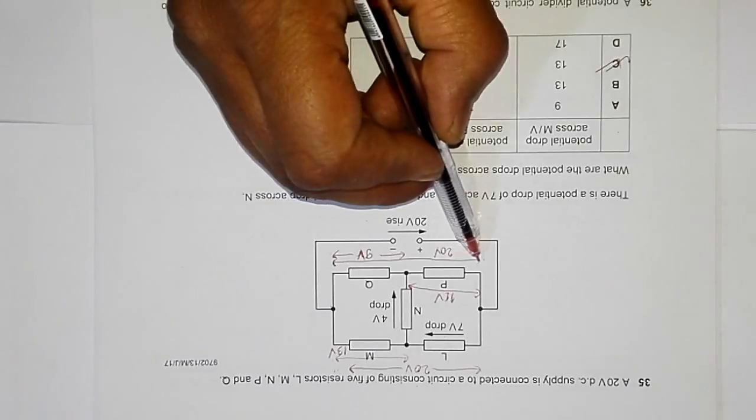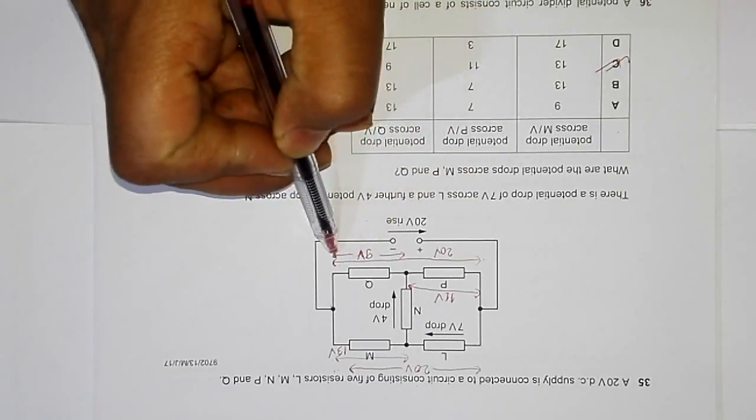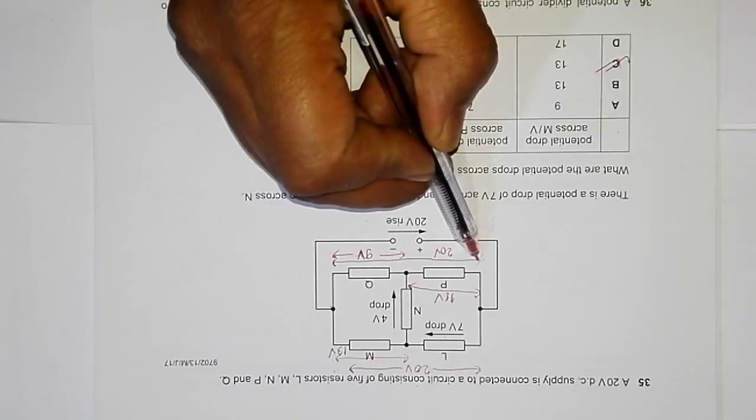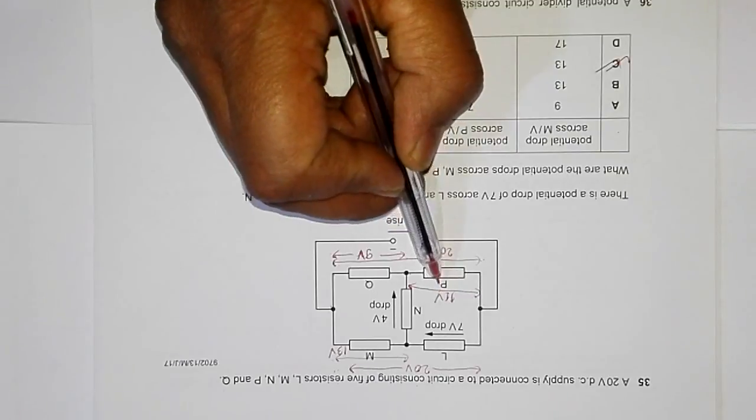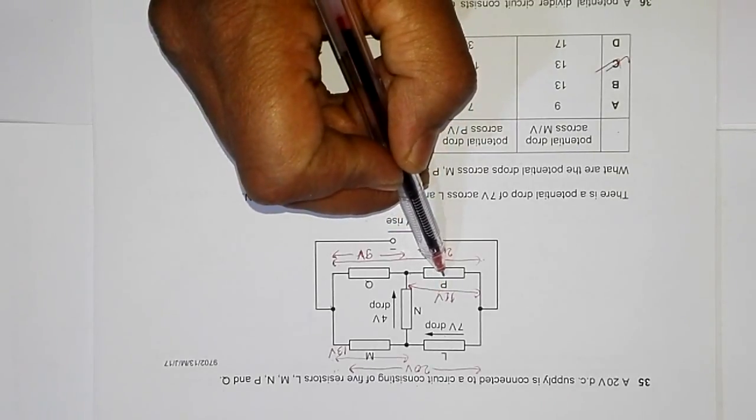Now again, if this is 20 volt and if this is 9 volt, the remaining should be 11 volt from here to here. So the PD across P is 11 volt.